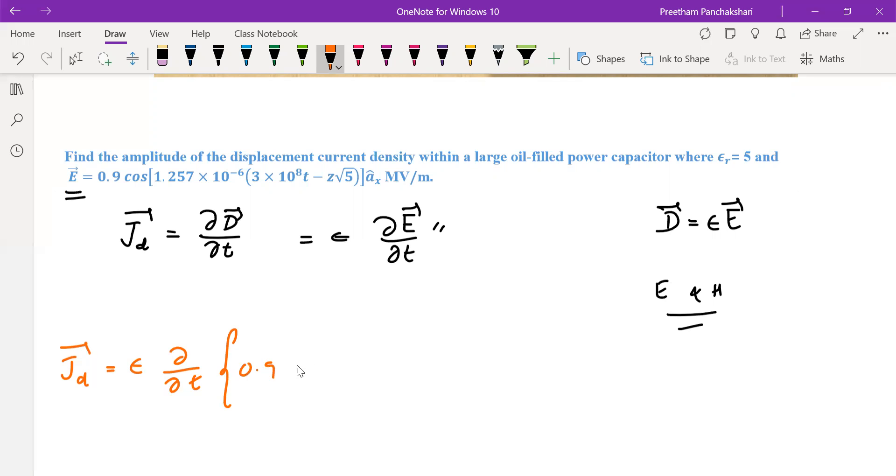0.9 cos(1.257×10⁻⁶(3×10⁸t - z√5)) MV/m. So let us copy the electric field.